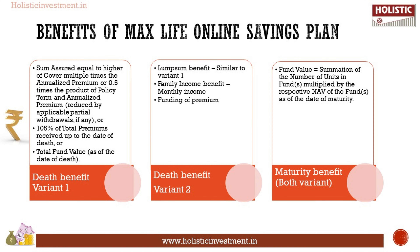Next, we shall look at the benefits of MaxLife Online Savings Plan. Death Benefit: Under Variant 1, on the death of the life insured anytime during the policy term, the nominee shall get the highest of the following benefit — sum assured equal to the higher of cover multiple times the annualized premium, or 0.5 times the product of policy term and annualized premium, or 105% of total premiums received up to the date of death, or the total fund value as of the date of death.